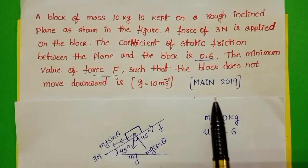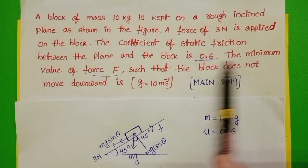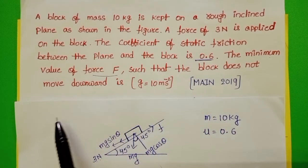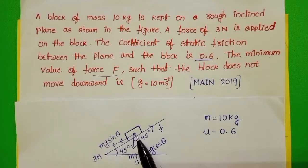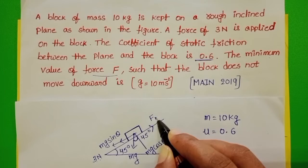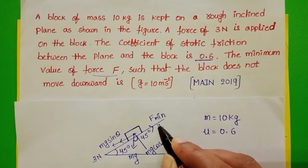In this question, we have to find out the minimum value of force such that the block does not move in downward direction. So, to get the equilibrium position of the block, we apply a minimum force in upward direction. So we have to find out the value of this minimum force.